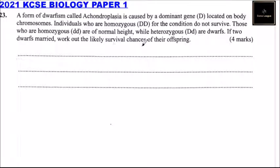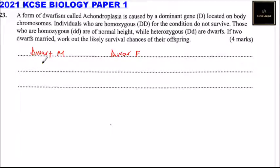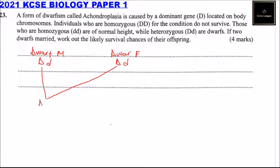We can say this is dwarf one and this is dwarf two — a male and a female. They both possess the genes D and d, and this one also possesses the same. So we can have this one combining with this one.